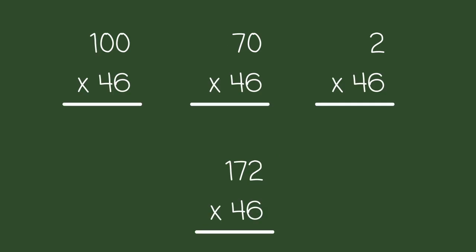Now it's time to multiply. Let's start with 100 times 46. Remember, for any number times 100, you just add 2 zeros at the end of that number. 100 times 46 equals 4600. Sounds simple enough.